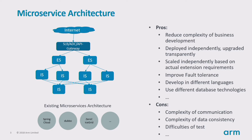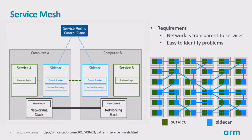Generally, the advantages overcome the disadvantages. One outstanding problem is that networking is required to be transparent, and problems in the networking need to be identified quickly and easily once they occur. Then came the service mesh, which came to resolve the communication complexity in the microservice architecture.